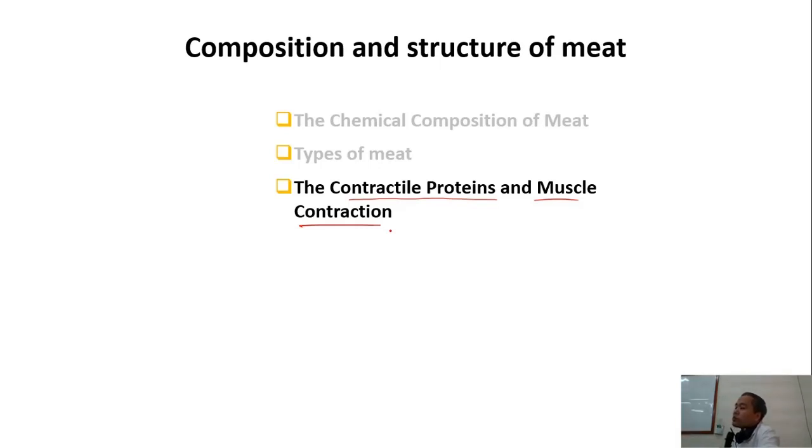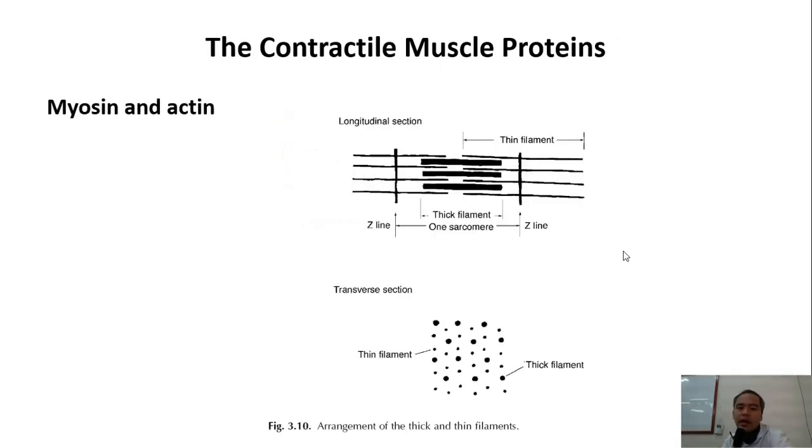So you cannot relax your muscle. The muscle is relaxed because the other one is contracted. And what are the proteins responsible for muscle contraction? Myosin and actin. Which one is thick filament? Myosin. And this one is thin filament.